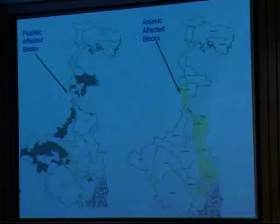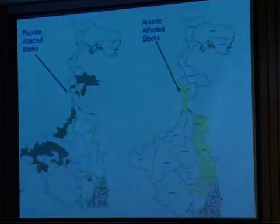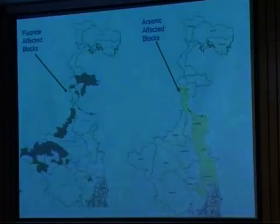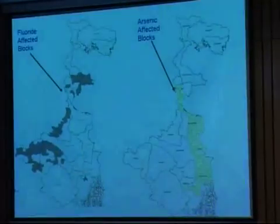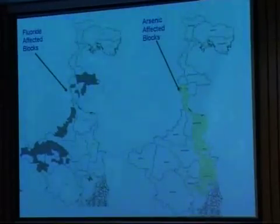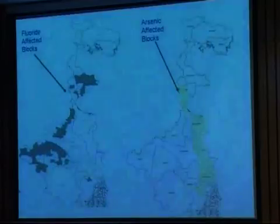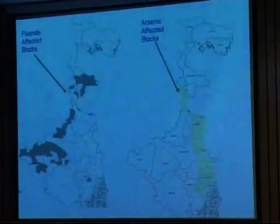Here are two maps. On the western side are arsenic-contaminated blocks, and on the eastern side you will find the fluoride-contaminated blocks. Officially 81 blocks are contaminated with arsenic and 49 blocks are contaminated with fluoride.